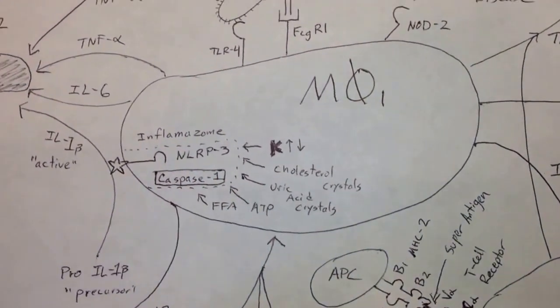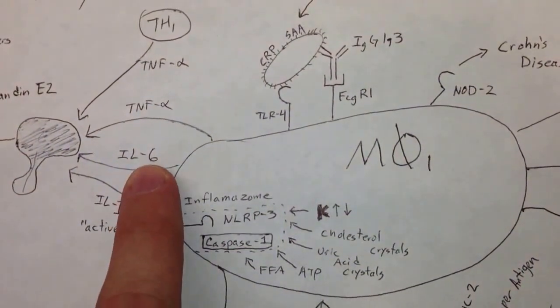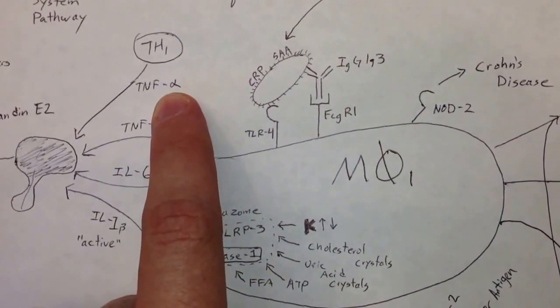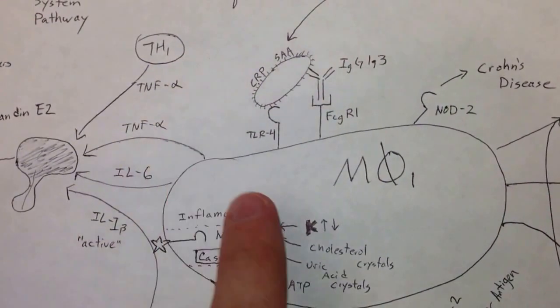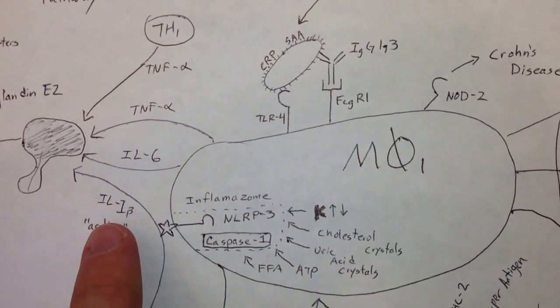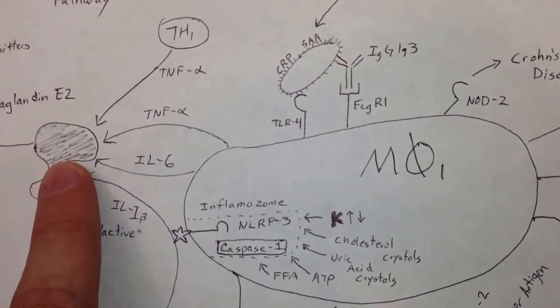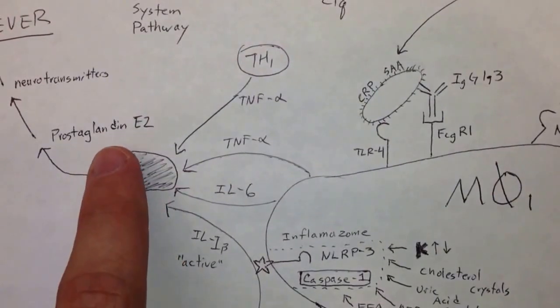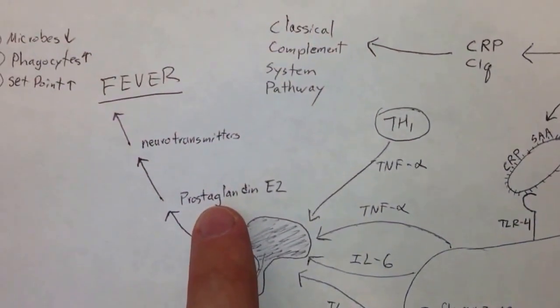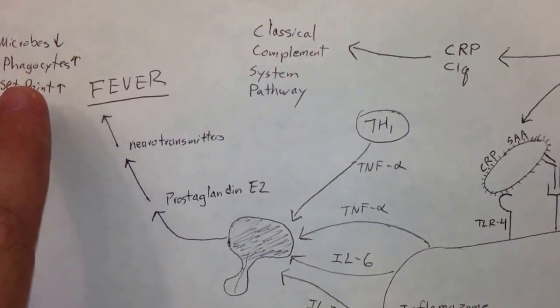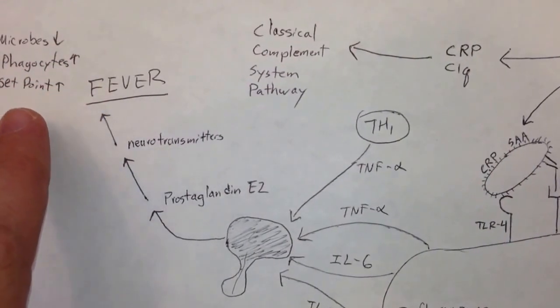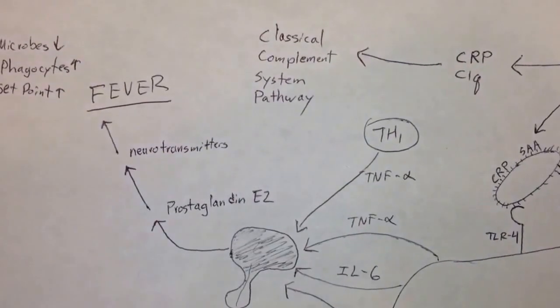Also, the type 1 macrophage is going to be secreting interleukin-6 and tumor necrosis factor alpha. You also have some T helper cells that might secrete some tumor necrosis factor alpha, but this macrophage can do it all by itself. So tumor necrosis factor alpha, interleukin-6, and interleukin-1 beta all go to the hypothalamus. The hypothalamus will then secrete prostaglandin E2, which will activate neurotransmitters, which will activate fever. And so fever will cause microbes to slow down, it will cause phagocytes to speed up and work faster, and it will change the set point of your temperature in your body.